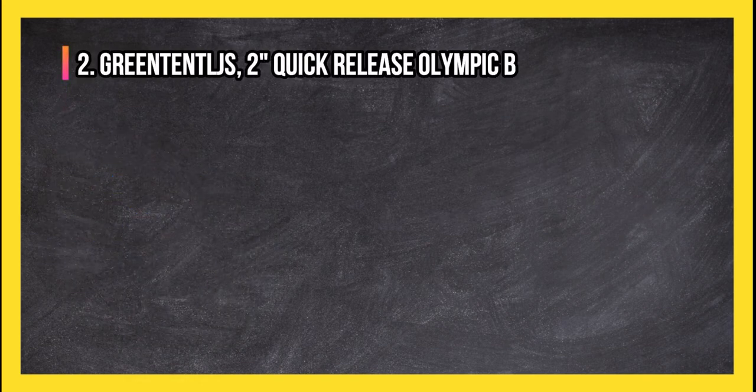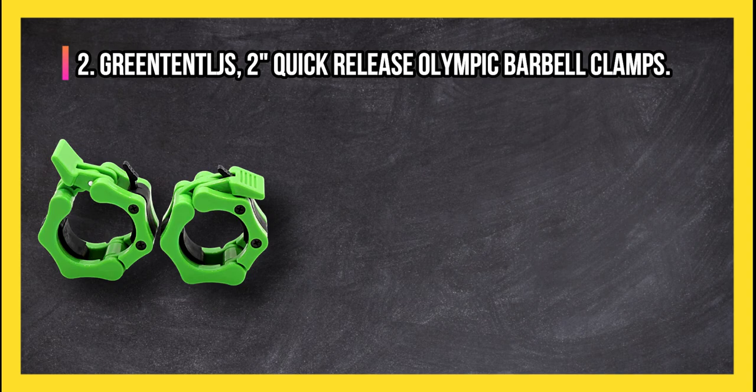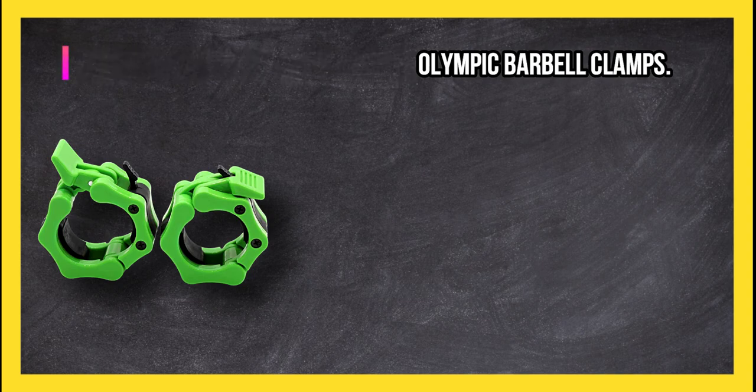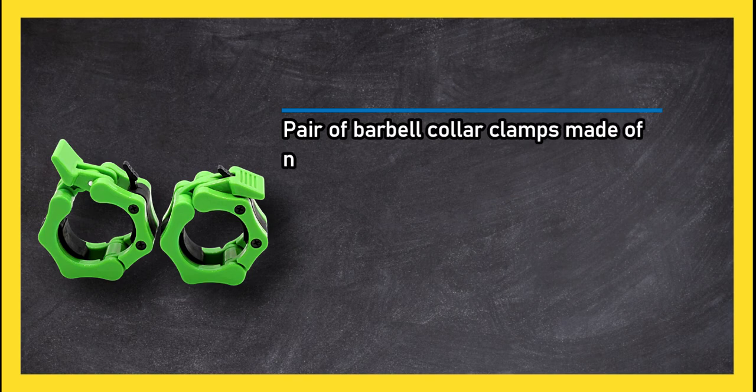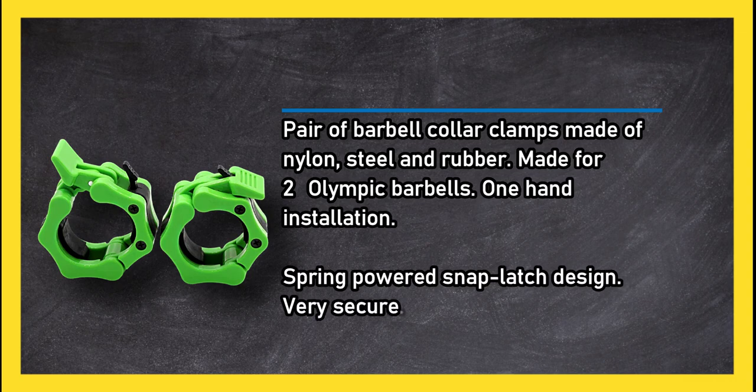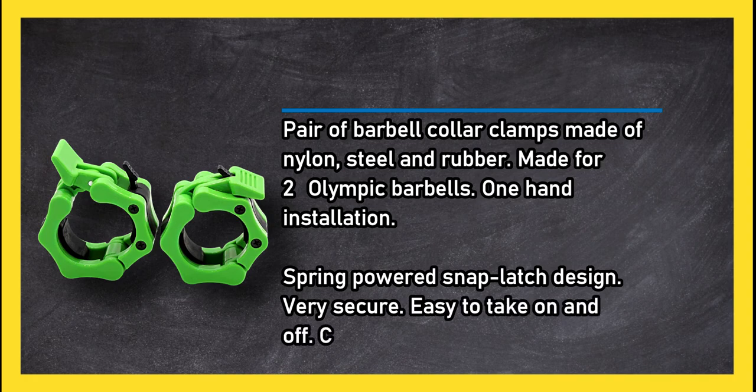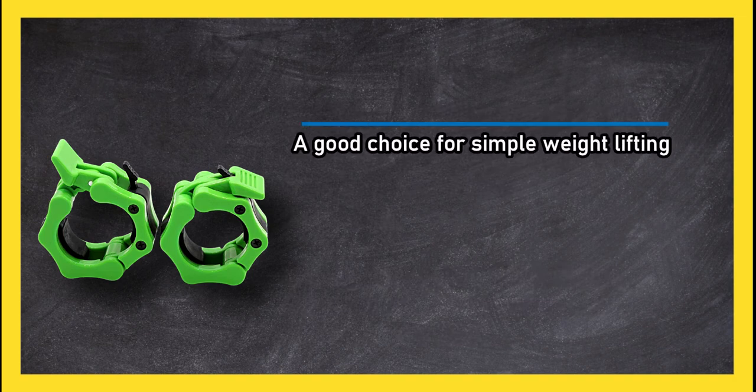At number two: Green Tent LJS two-inch quick release Olympic barbell clamps. Pair of barbell collar clamps made of nylon, steel, and rubber. Made for two-inch Olympic barbells with one-hand installation and spring-powered snap latch design. Very secure, easy to take on and off, with a choice of colors. A good choice for simple weightlifting workouts, but they may not stay in place.